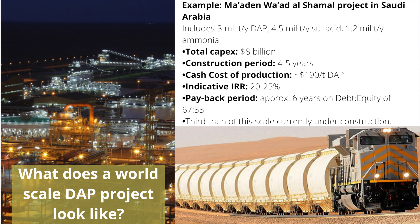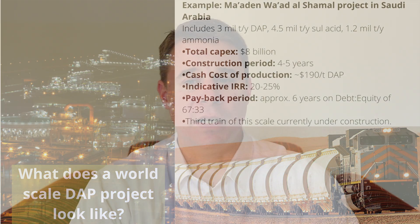Looking at the Marden project in more detail, we see that this is a fully integrated site, which means it has its own ammonia and sulfuric acid production on site as well as the mining of phosphate rock at a mine in the interior of Saudi Arabia. At its production site, they make phosphoric acid and then the finished products such as MAP and DAP.